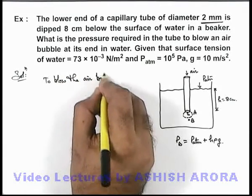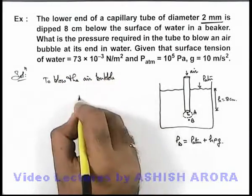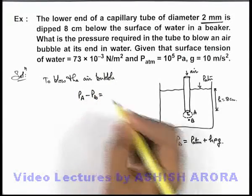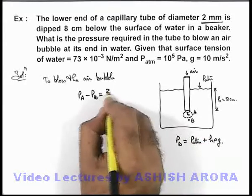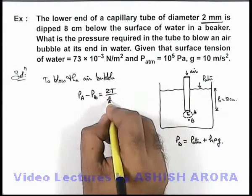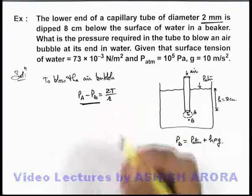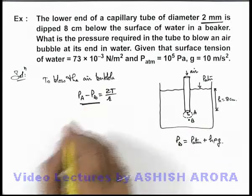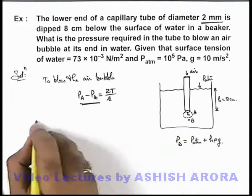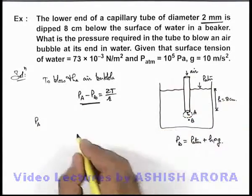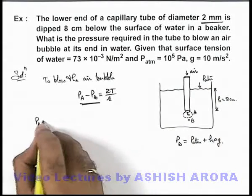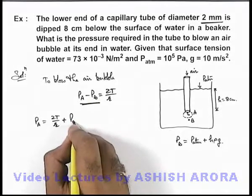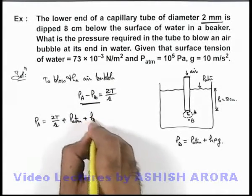Pressure at point A minus pressure at point B, which is the excess pressure inside, is 2T/r. Here if we take the minimum value of r, the pressure will be maximum which is required, otherwise we can partly blow it. So in this situation, as we know the value of pressure at point A, which is required or it is through the air inside the tube, will be equal to 2T/r plus pressure at B, which is P atmospheric plus h ρ g.